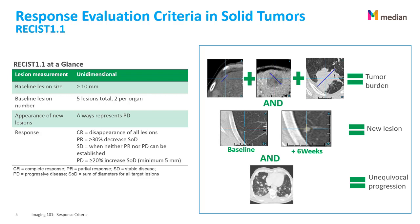Here is an example of criteria. It uses measurements — the largest diameter of a tumor — and it uses biomarkers, in this case the size of the tumor. It uses a set of rules and measures to provide a structure and limits for readers when reporting the criteria.